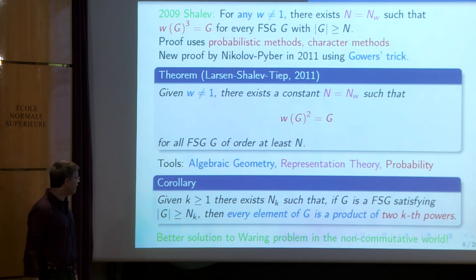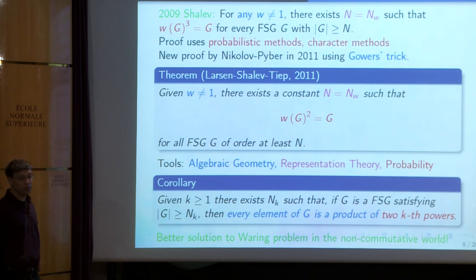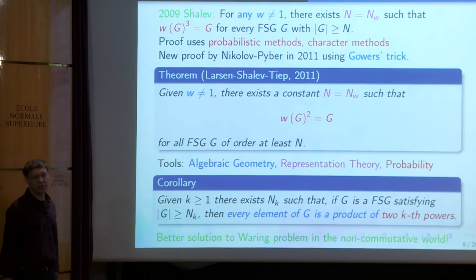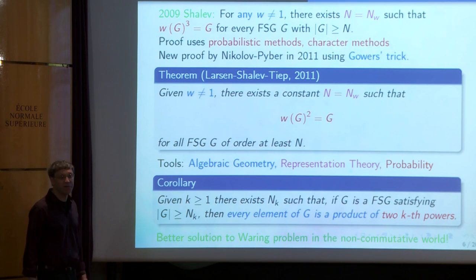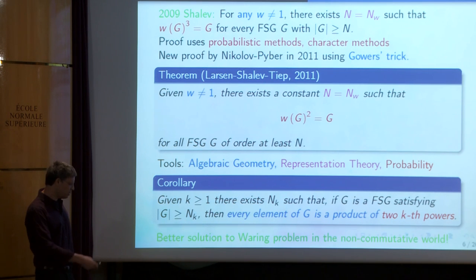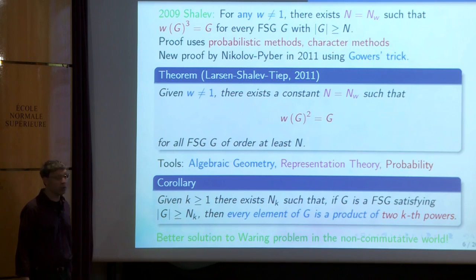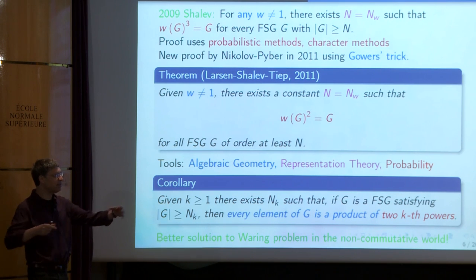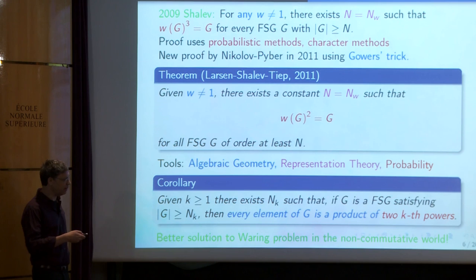In the context of powers — since in the Waring problem we study powers — in every finite simple group, if it's large enough, given k, every element is a product of two k-th powers. Just a minute ago we had a product of f(k) k-th powers, and now f(k) became two. We already see that in some way there are better solutions to Waring-type problems in the non-commutative world. The sums needed in number theory are unbounded, but the products here are of length two, which is quite surprising.